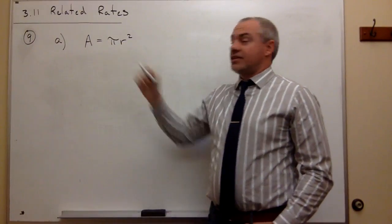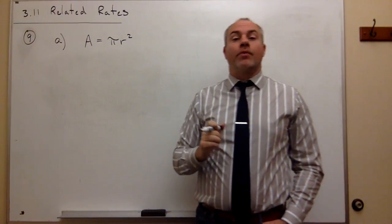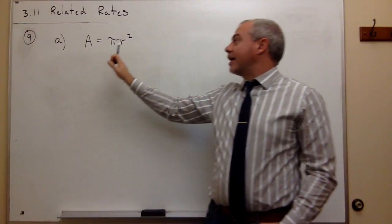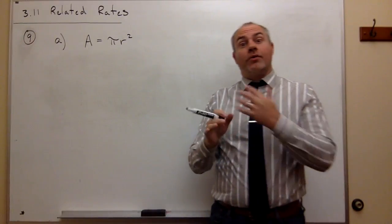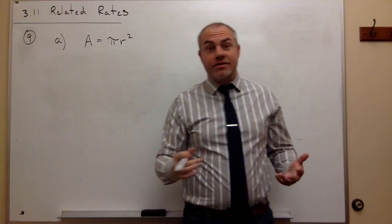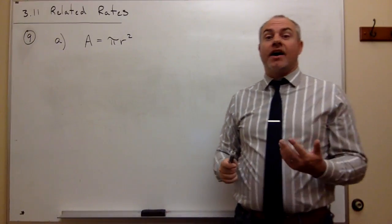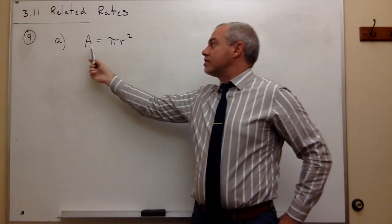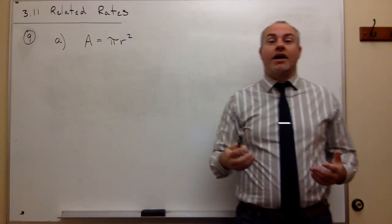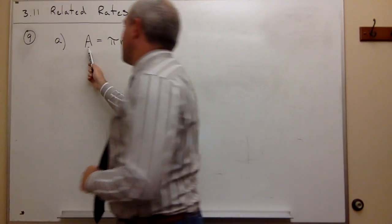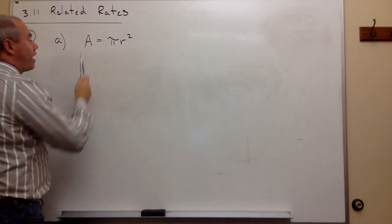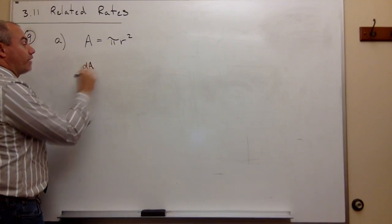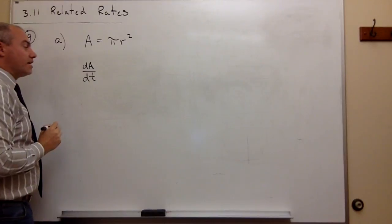Now it's time for the related rates piece. We need to take the derivative of this equation, but not with respect to the variable A, not with respect to r, not with respect to x — we take the derivative with respect to time. So if I take the derivative of the area with respect to time, I write dA/dt.